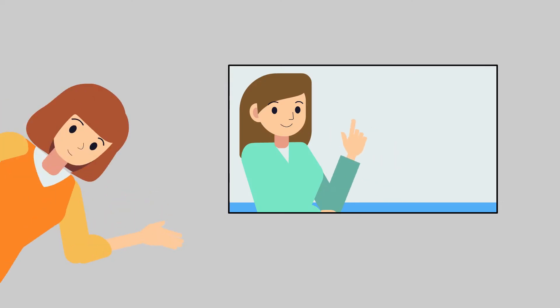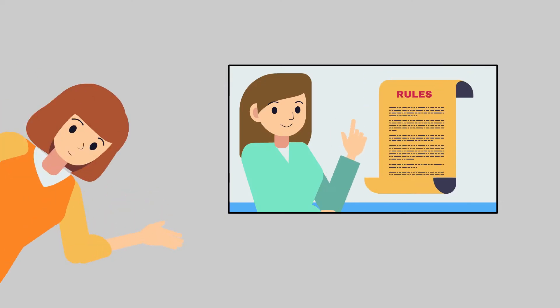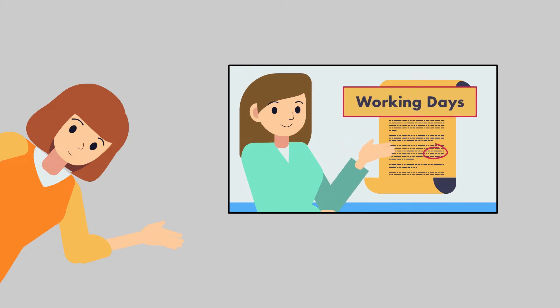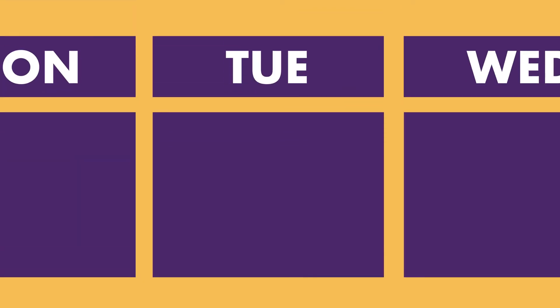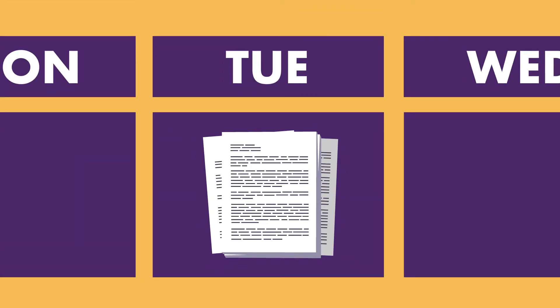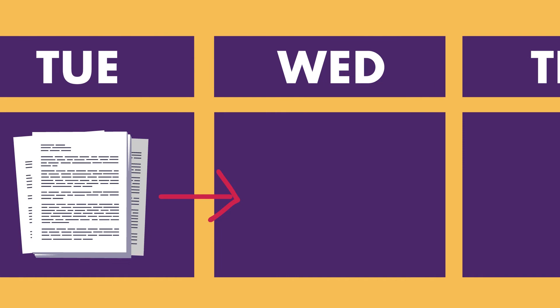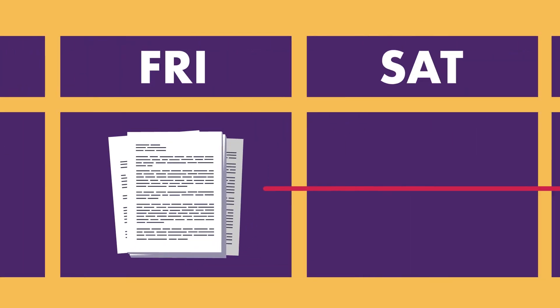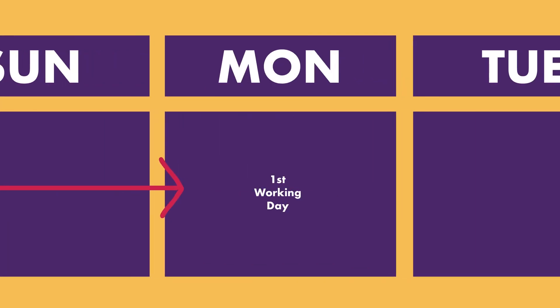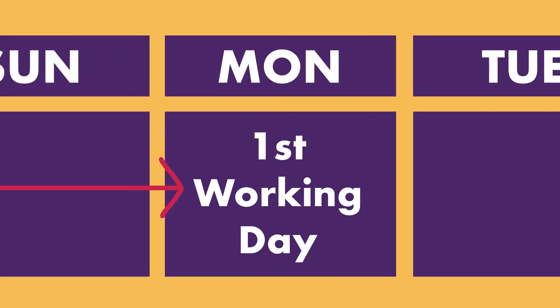You should check out our video that explains what the court considers a working day. When you calculate periods of time, you don't count the day on which an event happens. This means that if you are served with a document on a Tuesday, the first working day is the Wednesday. If you are served on a Friday, the first working day is the following Monday.